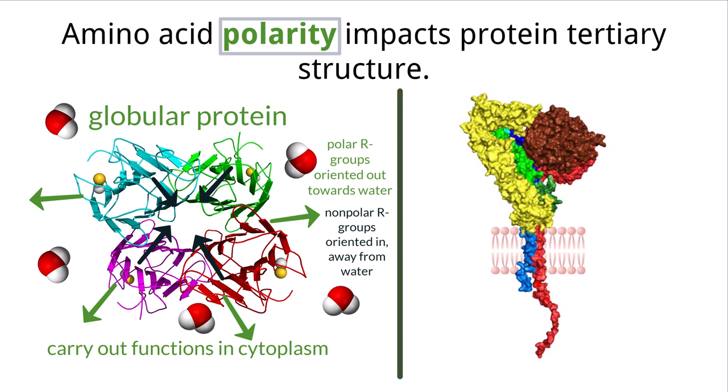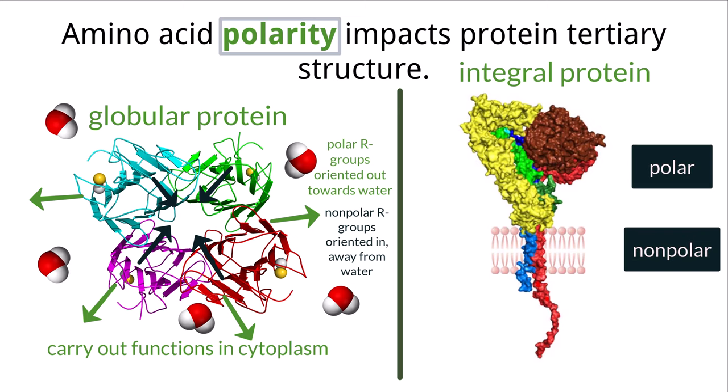Another example of how polarity impacts proteins can be seen in integral proteins, which are found embedded in the cell membrane. These proteins contain polar and nonpolar amino acids on different parts of the molecule. Recall that the cell membrane contains phospholipid tails that are nonpolar within its core. For these reasons, transmembrane sections of proteins contain amino acids that are also nonpolar, to be able to attract to those tails and embed themselves into the cell membrane.